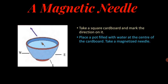Take a magnetized needle and stick it to a small piece of cardboard by means of sticking tape. Place the piece of cardboard with the needle on the surface of the water in the pot. In which direction does the magnetized needle point?